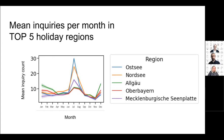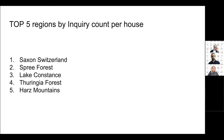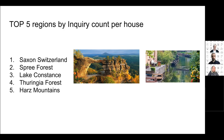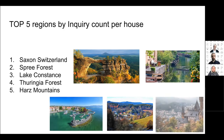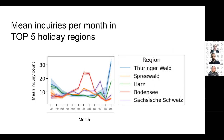In the second step, we looked at regions with the highest inquiry count per property, and these are not the same regions as before. The highest rates were in Saxon Switzerland, followed by Spree Forest, Lake Constance, Thuringia Forest, and the Harz Mountains. These regions have fewer properties but strong inquiry counts and attract significant interest — they may be worth further analysis and could represent potential growth areas. Only Lake Constance shows a typical summer peak; the other regions show more activity in autumn and winter, possibly due to hiking or skiing conditions.